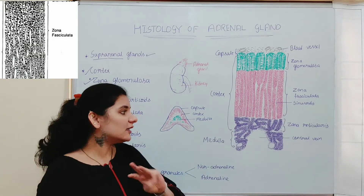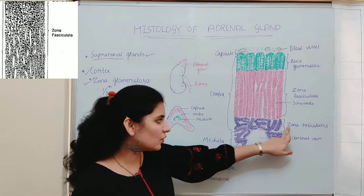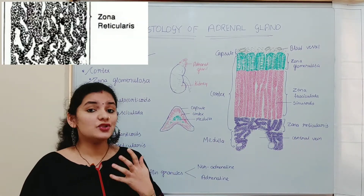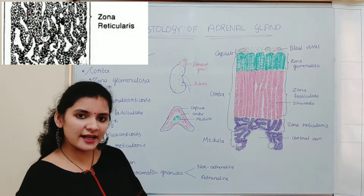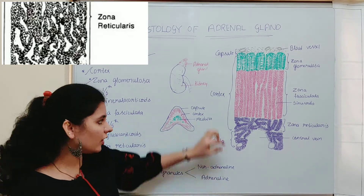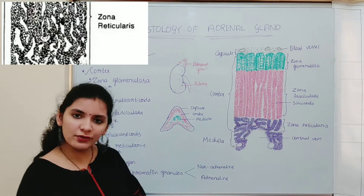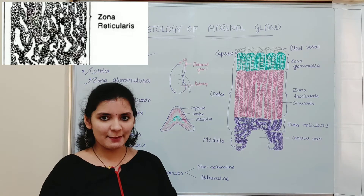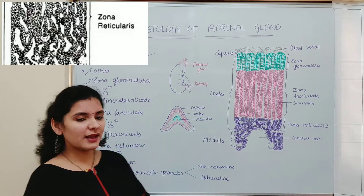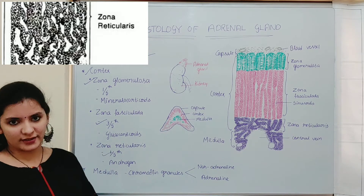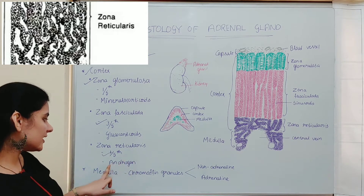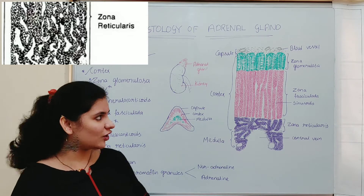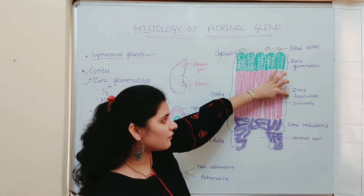The third and innermost part of the cortex is zona reticularis. As the name indicates, 'reticularis' means network — here the cells do not run in a radial direction but break up into a network. Numerous capillaries are found between this network of cells. Zona reticularis makes up about one-fifth of the cortex, and its function is the production of androgens or sex hormones.